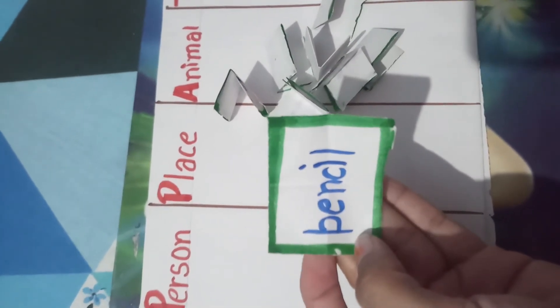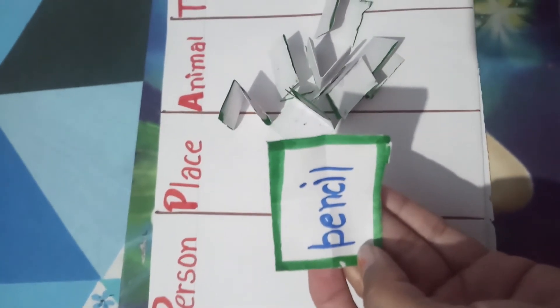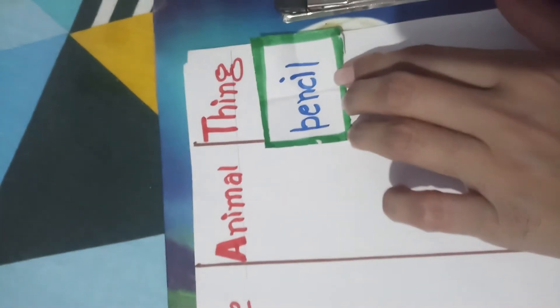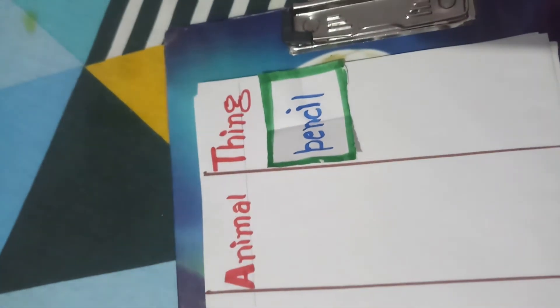So, what is pencil? The name of a person, place, animal or thing. Yes, pencil. Pencil is the name of a thing. So, I will keep this slip in this column.